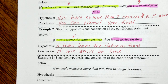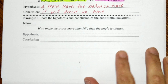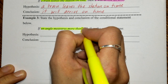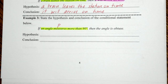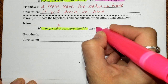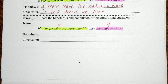Example three: 'If an angle measures more than 90 degrees, then the angle is obtuse.' Our hypothesis P is: 'an angle measures more than 90 degrees.' Our conclusion Q is just four words: 'the angle is obtuse.' Pause and fill those into the hypothesis and conclusion if you haven't already.